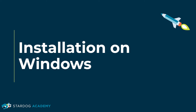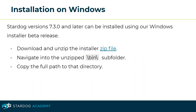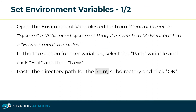This section is about installation on Windows. Stardog versions 7.3.0 and later can be installed using our Windows installer beta release. First, download and unzip the installer zip file. Navigate into the unzipped /bin subfolder and copy the full path to that directory. Then open the environment variables editor from Control Panel > System > Advanced System Settings, switch to the Advanced tab and click Environment Variables. In the top section for user variables, select the Path variable, click Edit and then New. Paste the directory path for the /bin subdirectory and click OK.